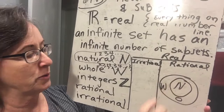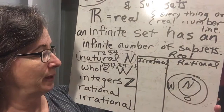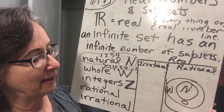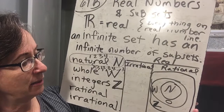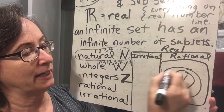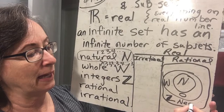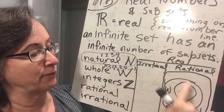Then we have integers. Integers are the plus and minus whole numbers, represented by Z with a little line. The whole numbers are all the positives, and then out here are the negative whole numbers, which are outside of the whole number set. The negative whole numbers plus all the positive whole numbers make up the set Z.